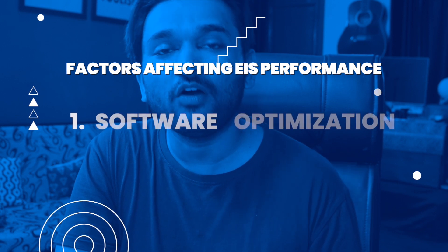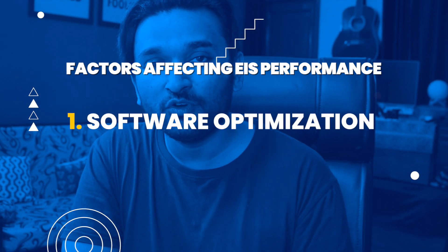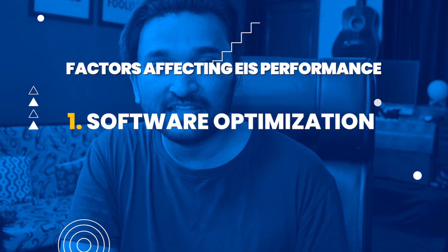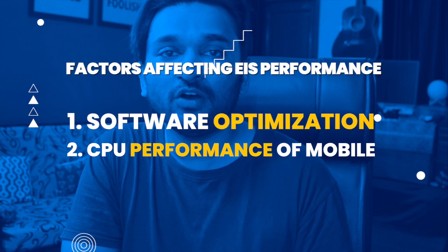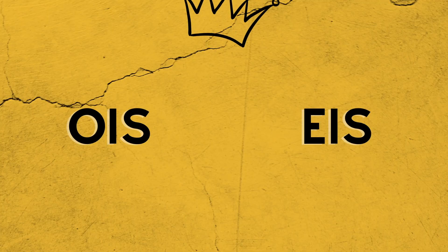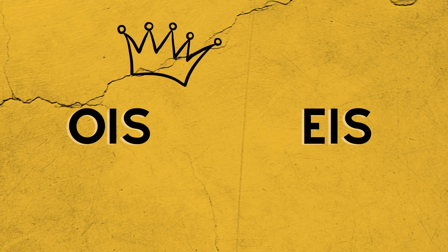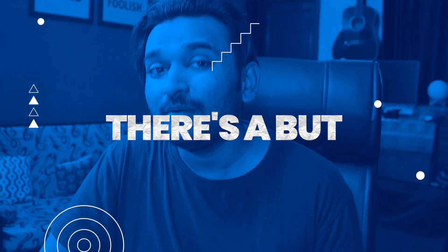How good the EIS will be depends on the software of the mobile phone manufacturer as well as the processing power of the smartphone. So which one is better? Obviously the OIS solution is better because the videos will not be cropped and you will get better results in low light. But both technologies can be used together in one smartphone, giving much better results.